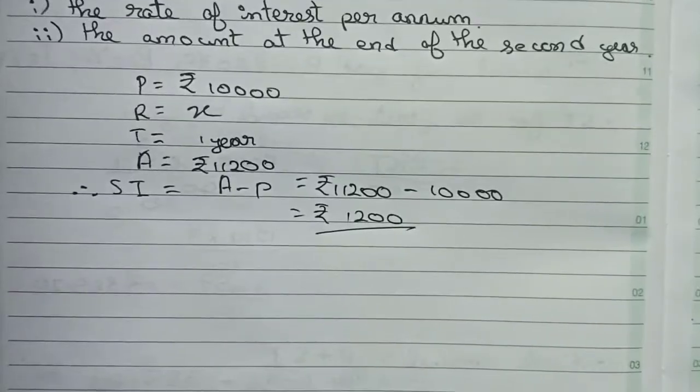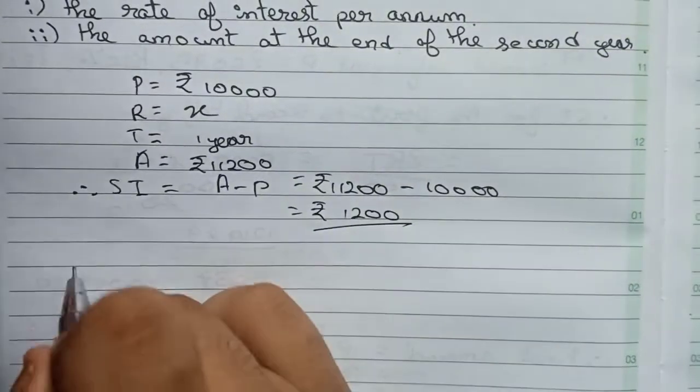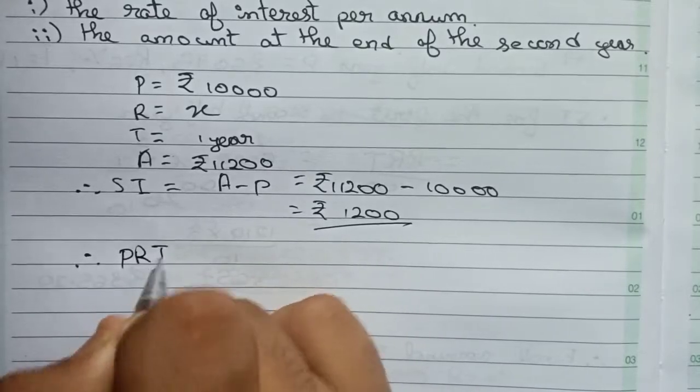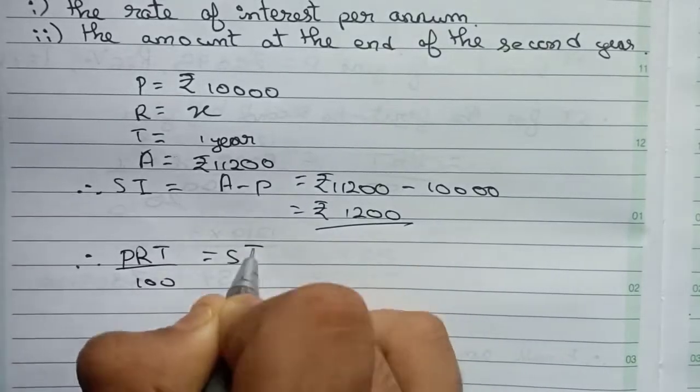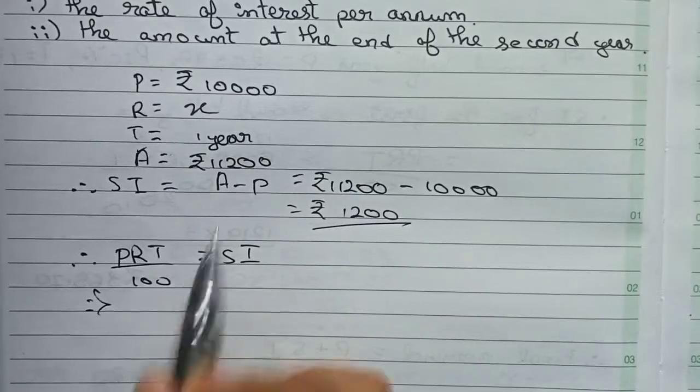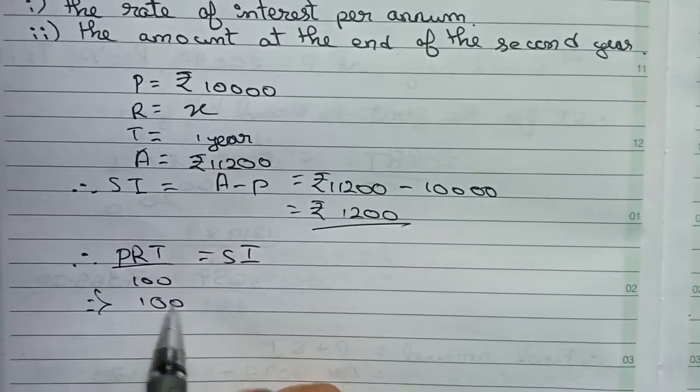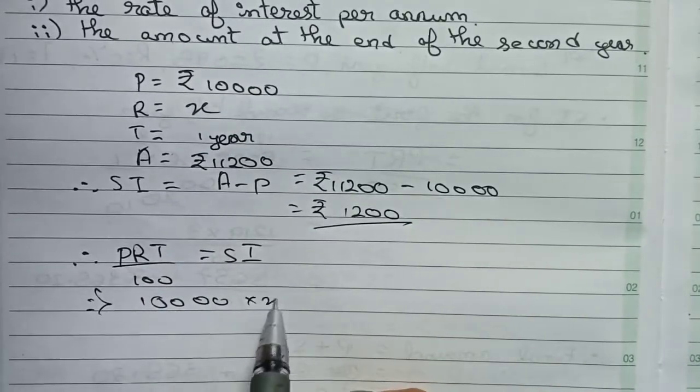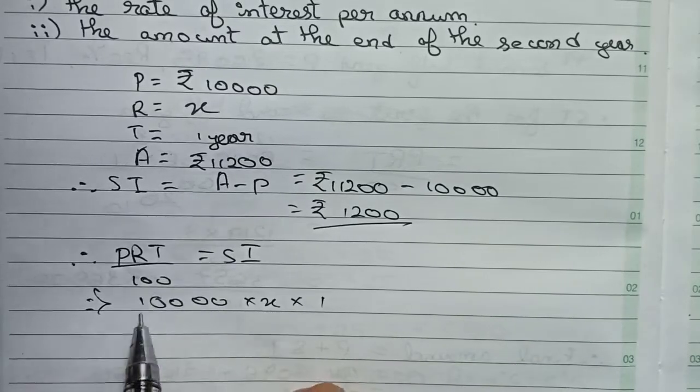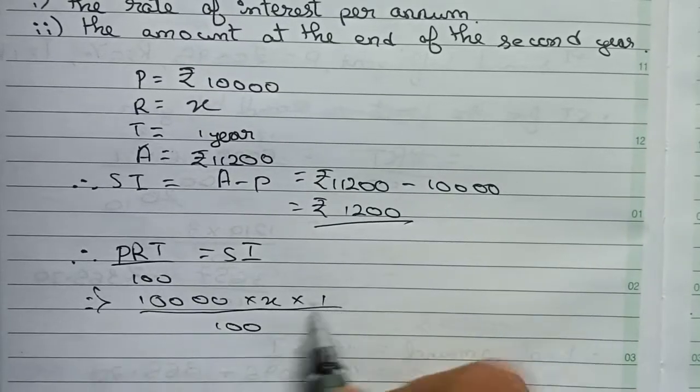Now I write the formula: PRT/100 = SI. So P is 10,000, rate is x, and time is 1. Therefore, (10,000 × x × 1)/100 = 1,200.